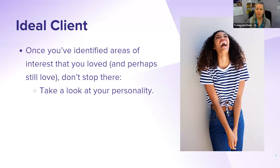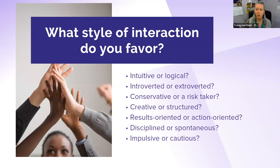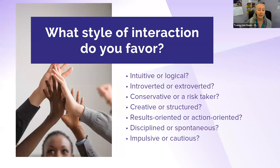Once you've identified areas of interest that you loved and hopefully still love, don't stop there. Take a look at your personality. What style of interaction do you favor? Are you intuitive or logical, introverted or extroverted, conservative or a risk taker, creative or more structured? Do you prefer being results-oriented or are you more action-oriented, disciplined, spontaneous, impulsive, cautious? Do you prefer to work one-on-one? Are you more comfortable with groups — large groups or small groups? If you teach, do you prefer to teach live or do pre-recorded lessons? Is your communication style suited more to talking or writing? Do you like presenting webinars or videos, or do you prefer writing posts or producing audio files or podcasts? Lots of things to think about and all can make a big difference.